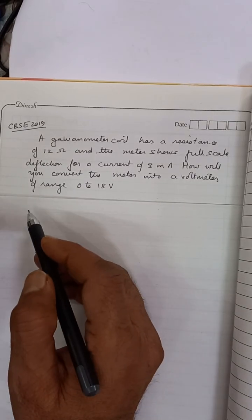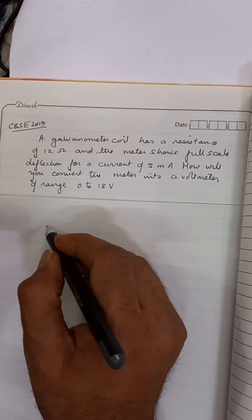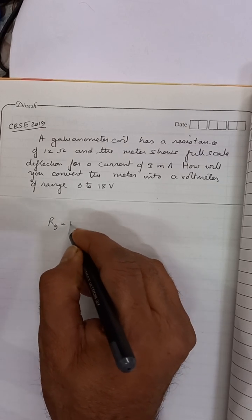This question is CBSE 2019. A galvanometer coil has a resistance of 12 ohms. RG is 12 ohms.